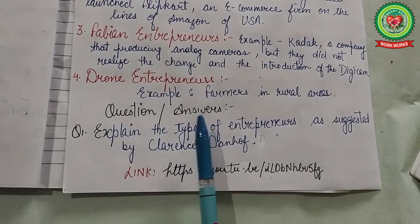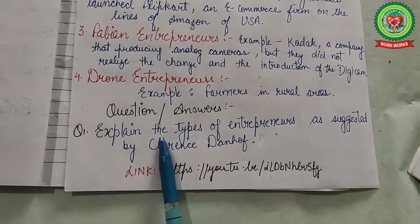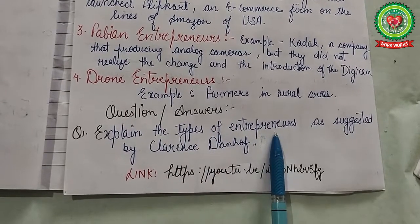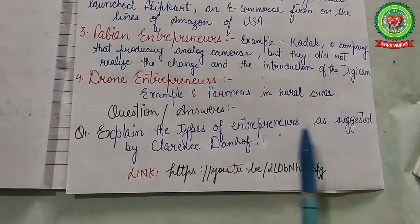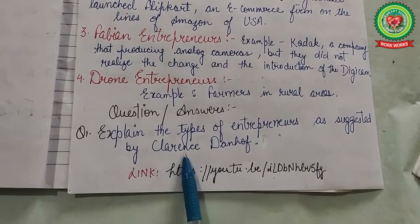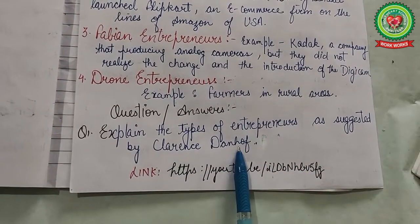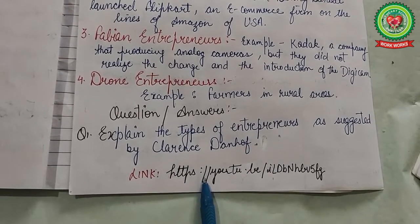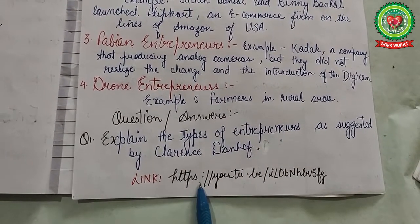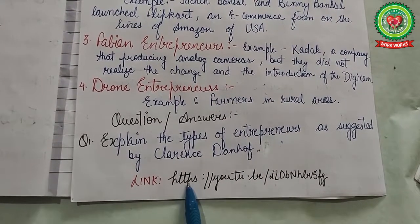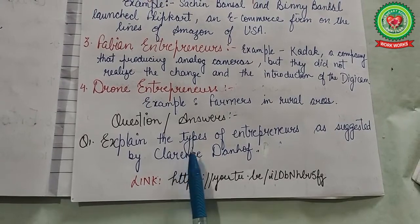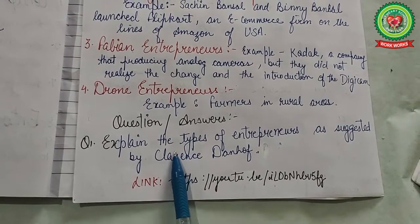This is all about today's topic. You have to write the question answer: explain the types of entrepreneurs as suggested by Clarence Danhof. Go through the various links on today's topic and write the answer to this question.